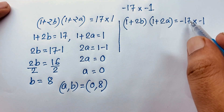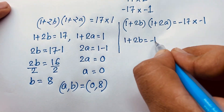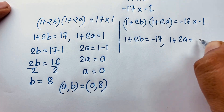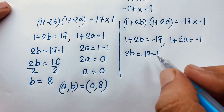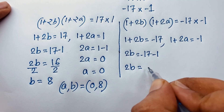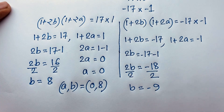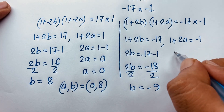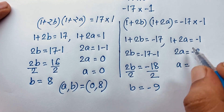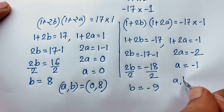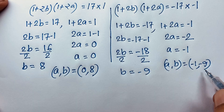Case 2: 1 plus 2B equals minus 17 and 1 plus 2A equals minus 1. So 2B equals minus 18, giving B equals minus 9. And 2A equals minus 2, giving A equals minus 1. So our second answer is A equals minus 1 and B equals minus 9. Our final answers are (0, 8) and (minus 1, minus 9).